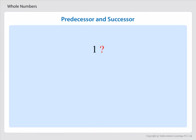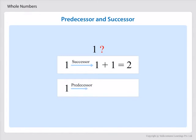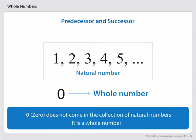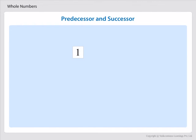What about number 1? The successor of 1 is 1 plus 1 equals 2, and predecessor of 1 is 1 minus 1 equals 0. But 0 does not come in the collection of natural numbers. It is a whole number. So, if we take 1 as a natural number, it has no predecessor.